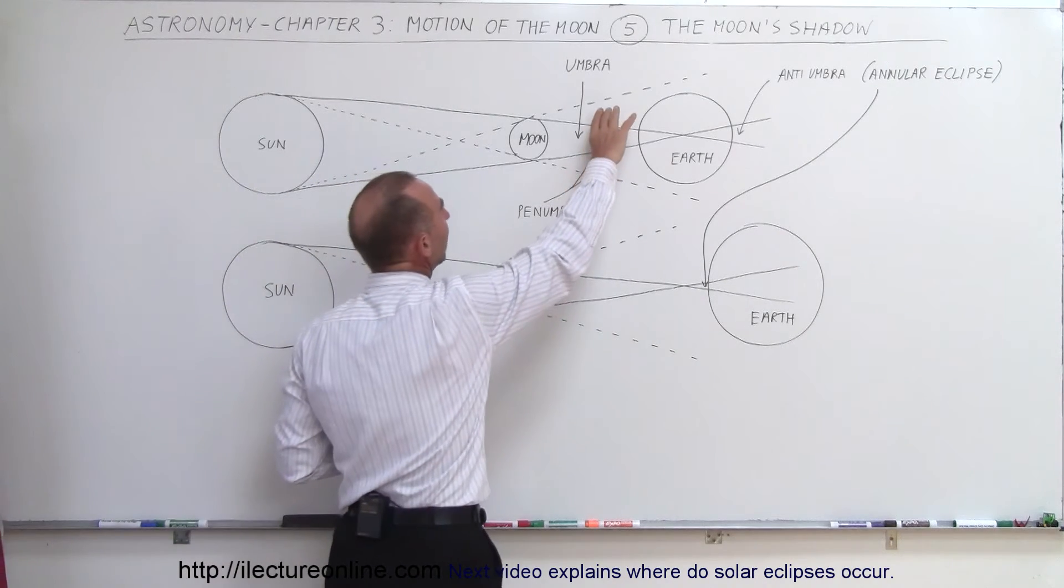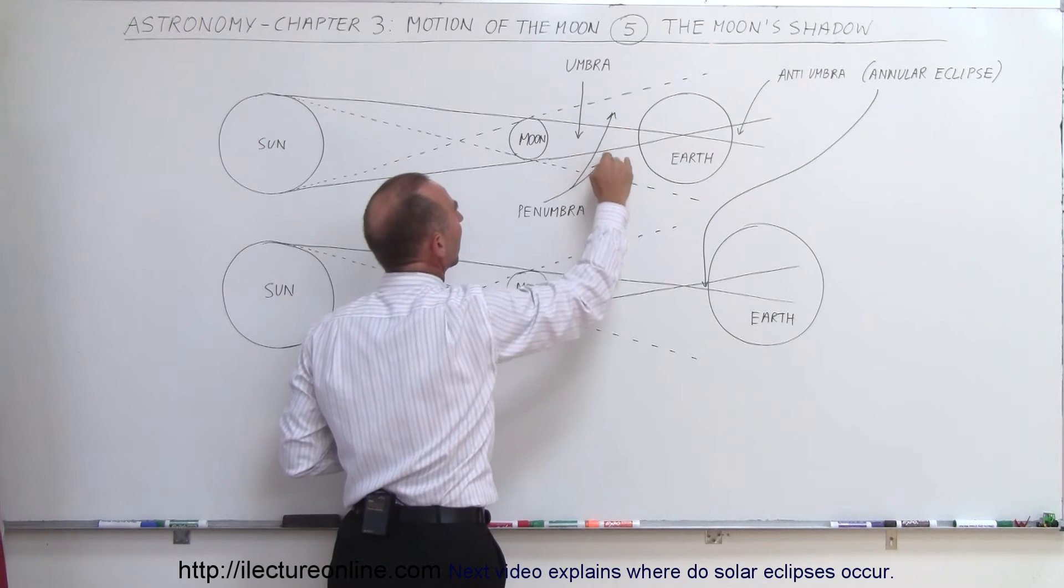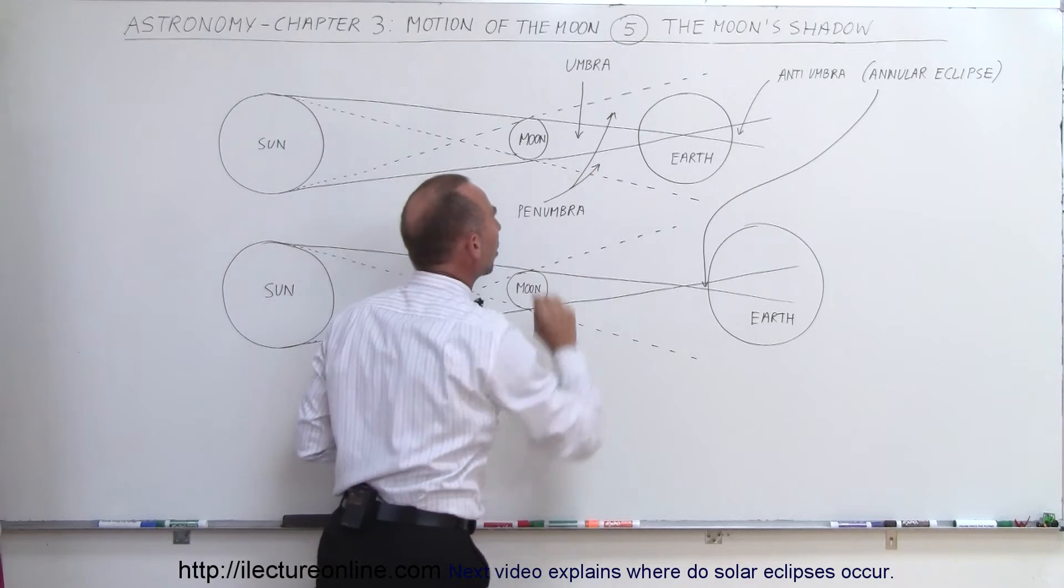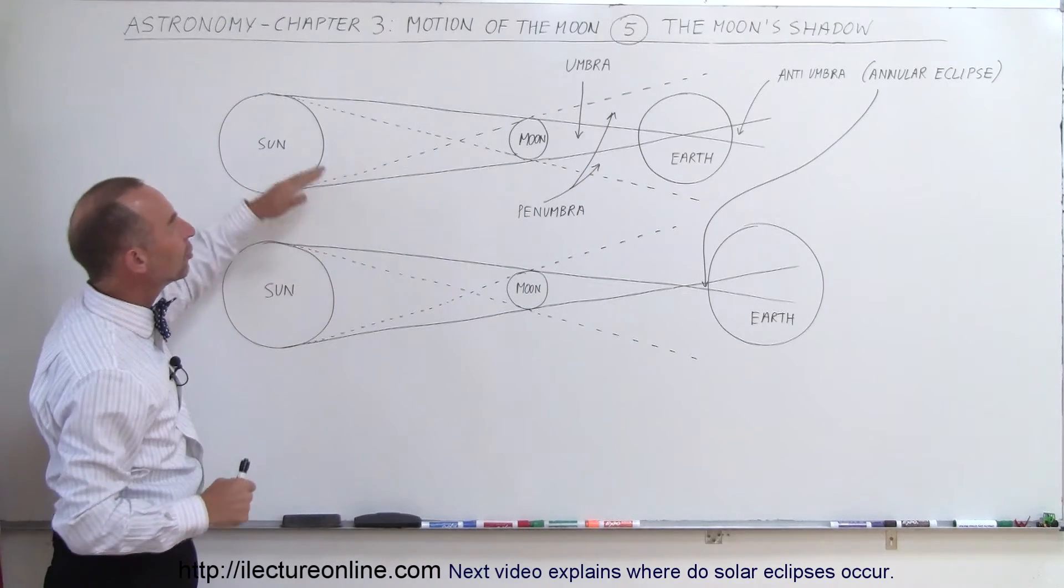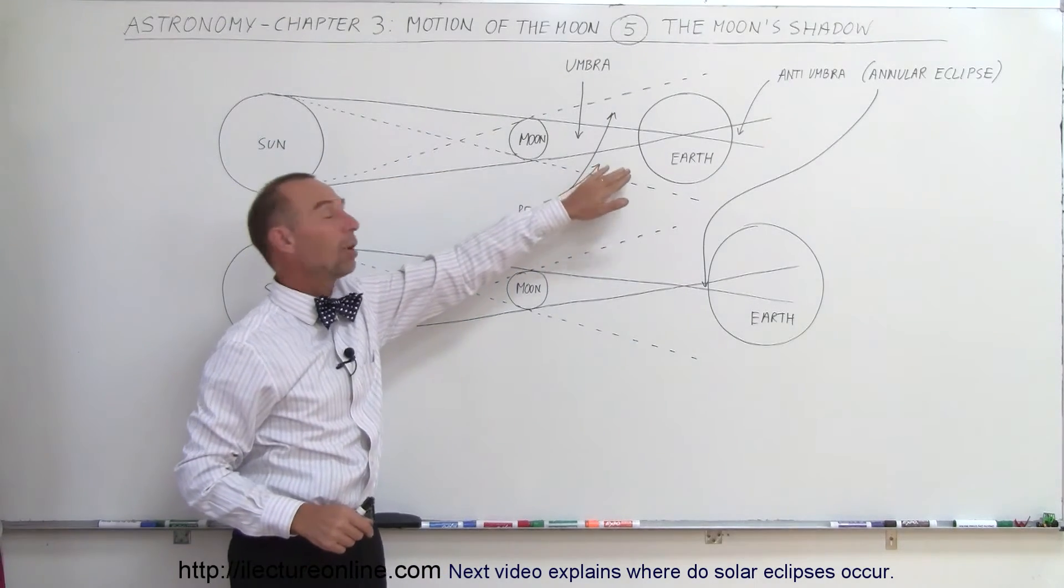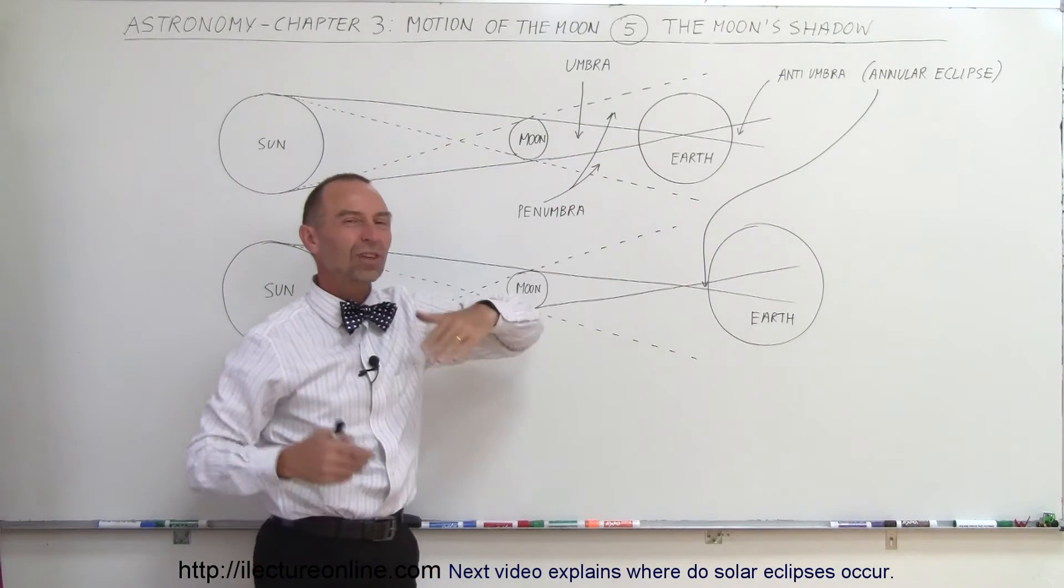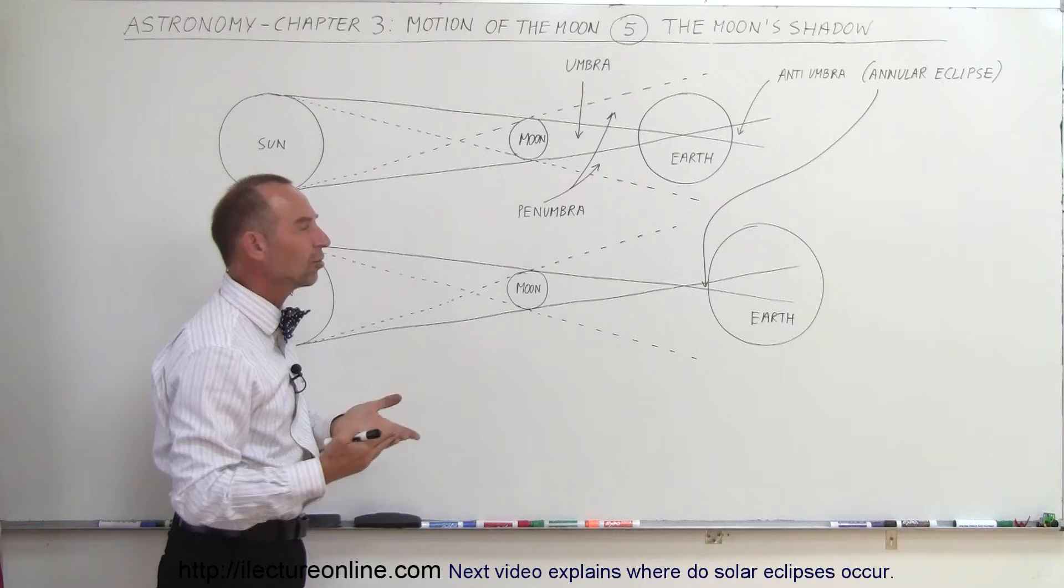Then we have the region right here on either side of the moon, or the moon's shadow, I should say. That's called the penumbra. So this is called the umbra, and this is called the penumbra, because even though most of the light of the sun is blocked there, some of the light from over here can actually reach that region. So there's kind of like partial darkness, not complete darkness.